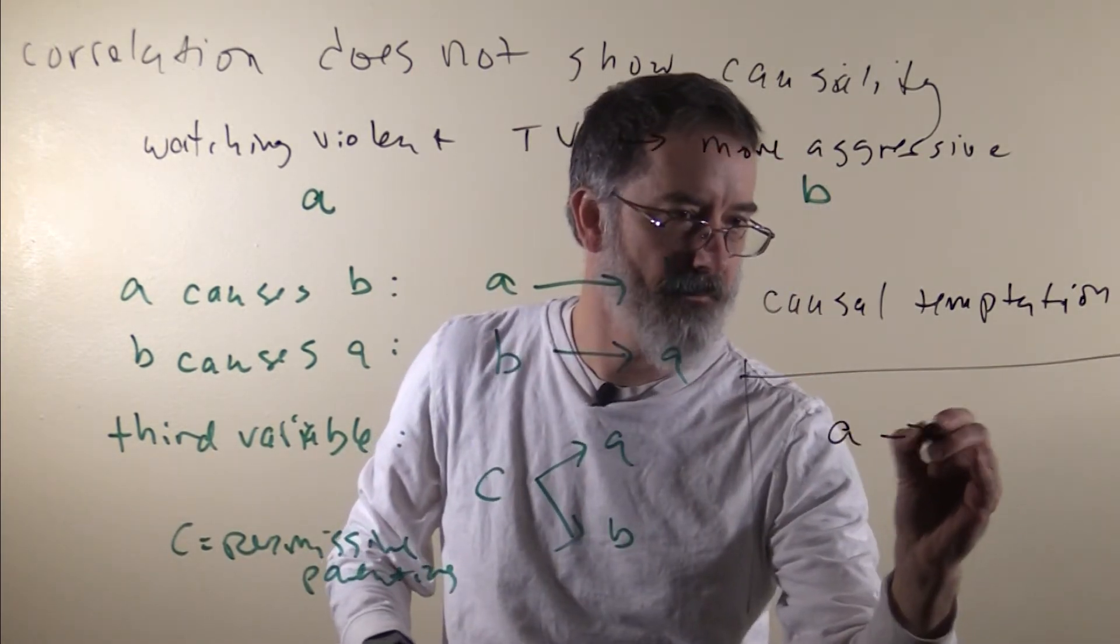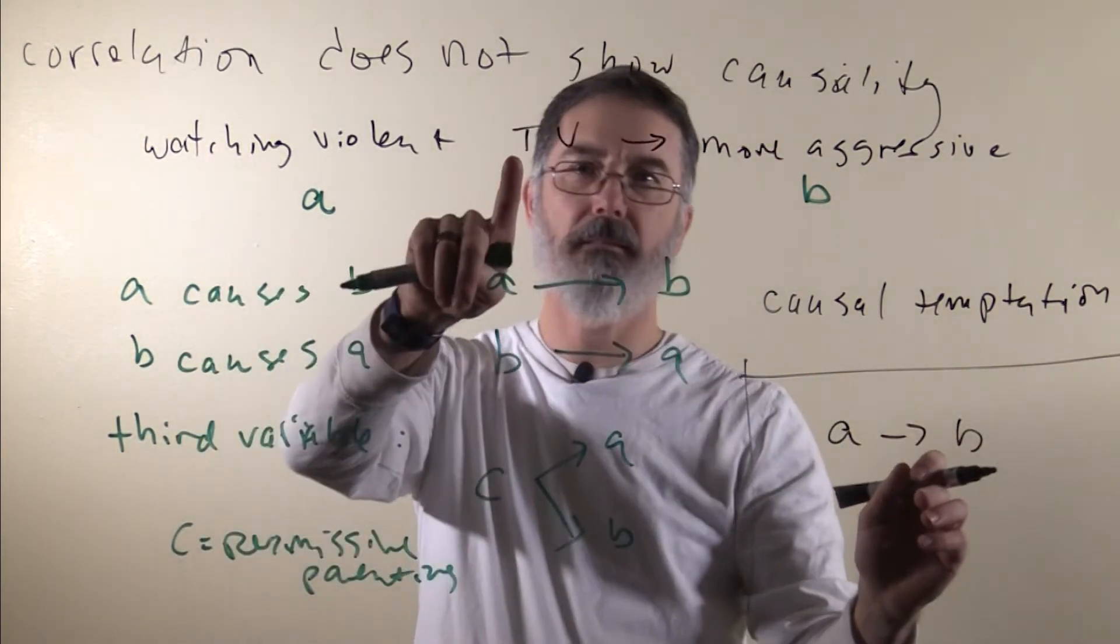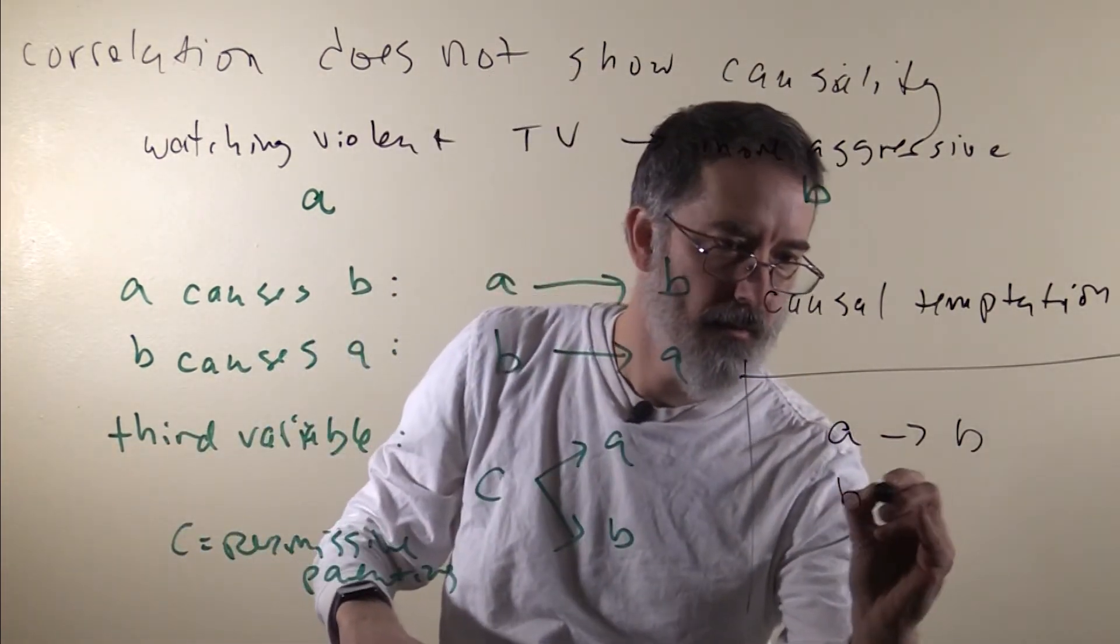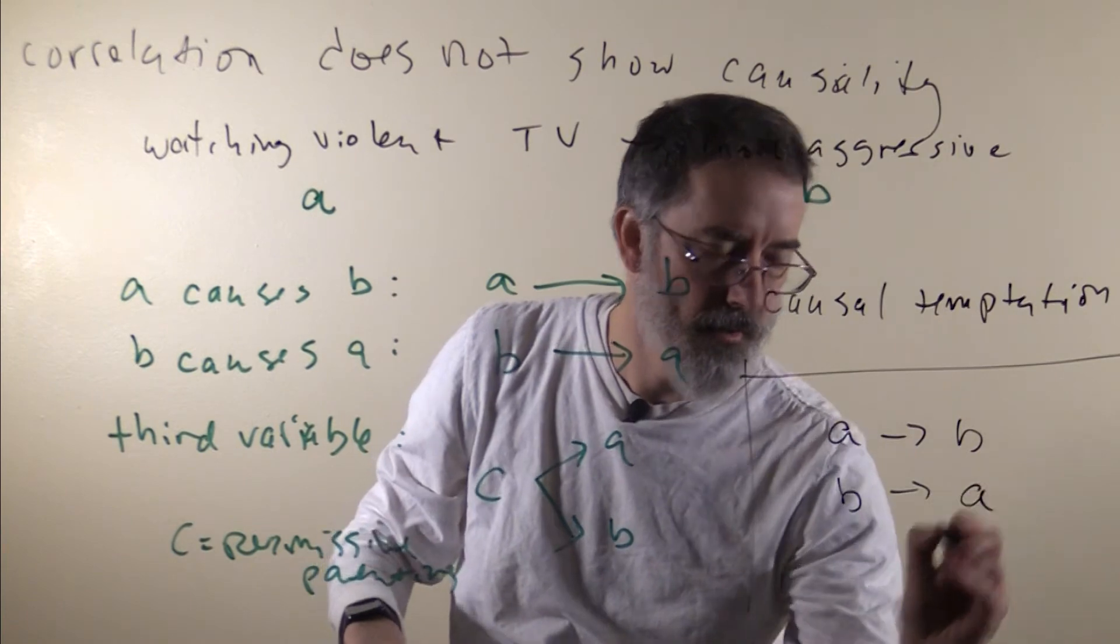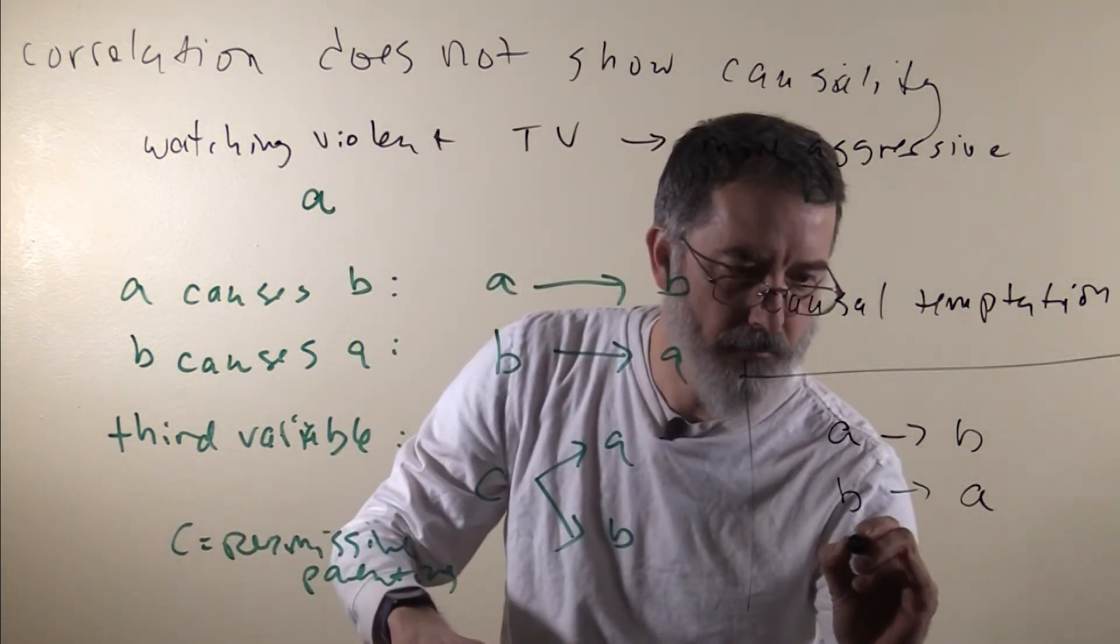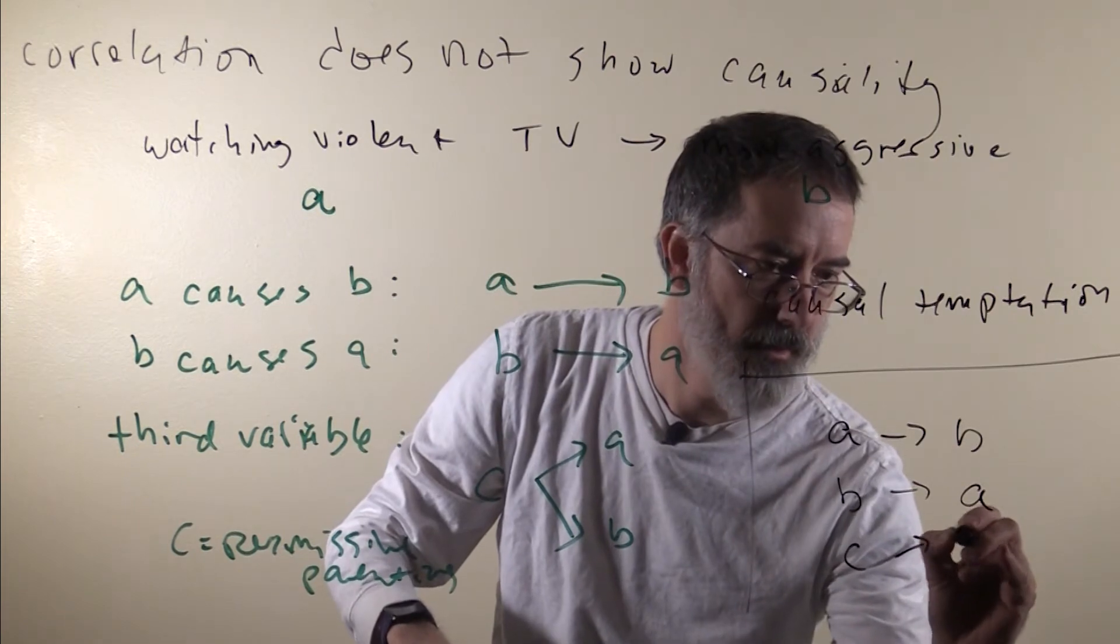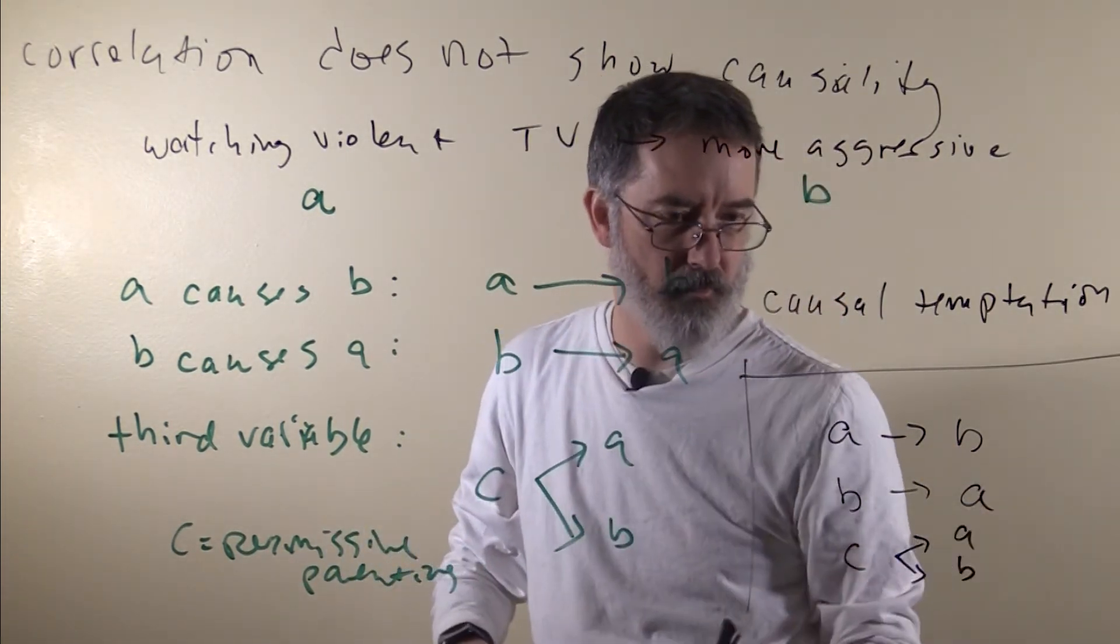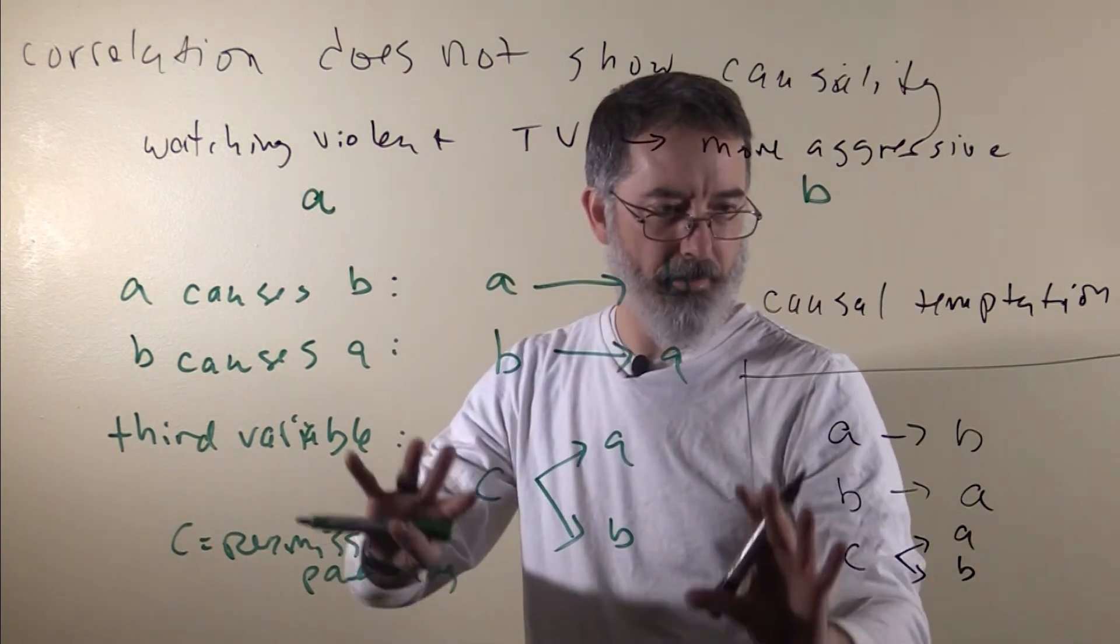So it could be A causes B, it could be the violent TV causes kids to be more aggressive. It could be violent kids seek out more violent TV. It could be that bad parenting is causing kids to watch more violent TV and be more aggressive. But there is some ways, like one way at least that people will often try to do this that is not quite right.